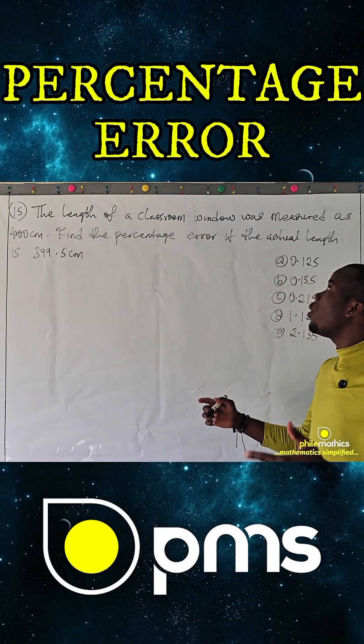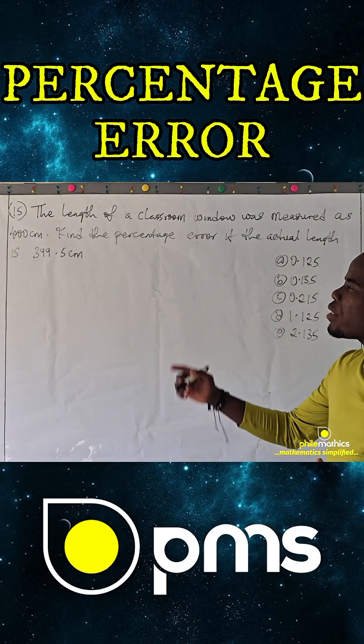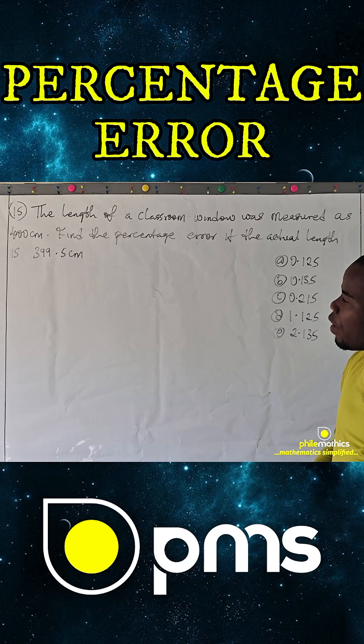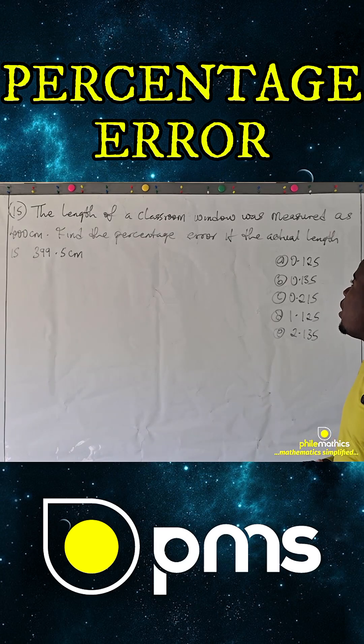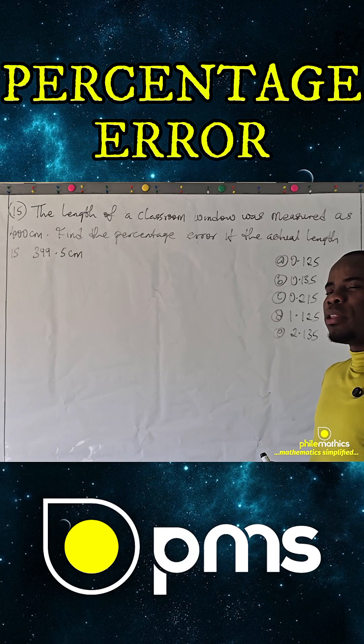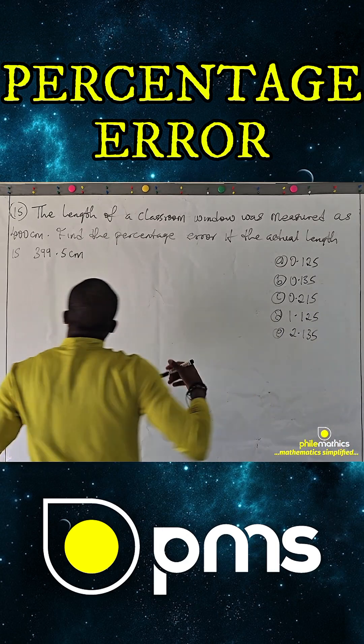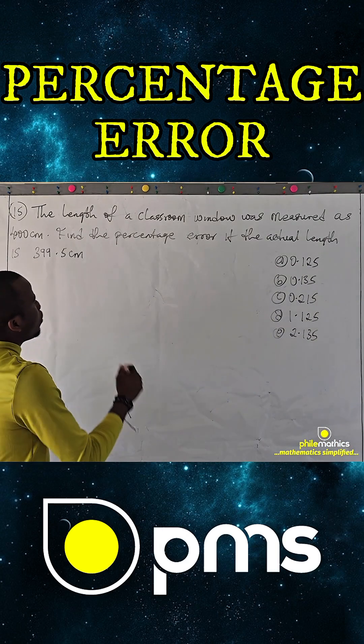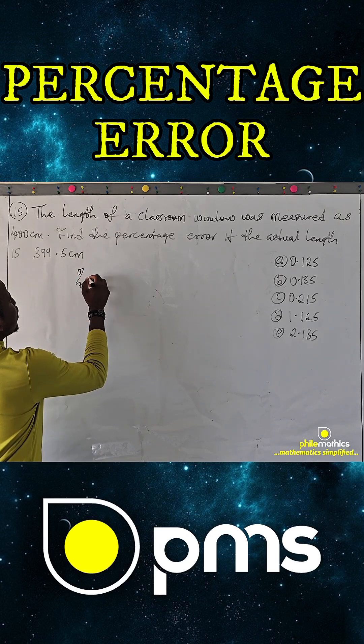The length of a classroom window was measured as 400 cm. Find the percentage error if the actual length is 399.5. So you want to recall the formula for percentage error.